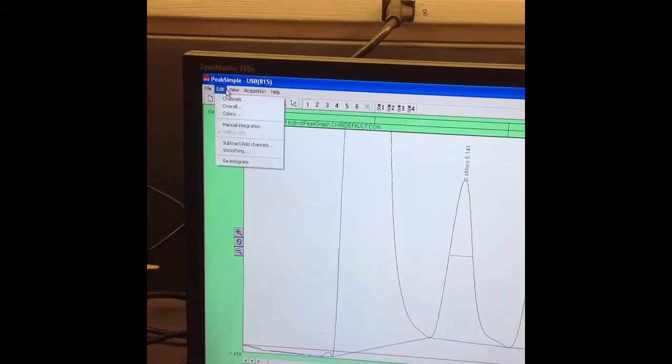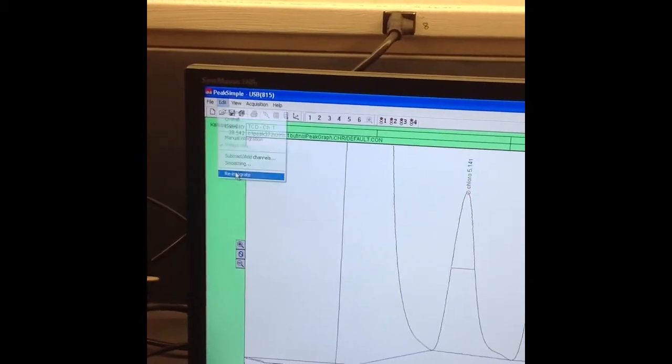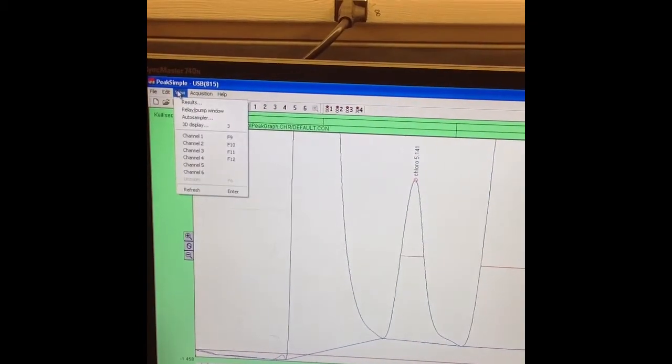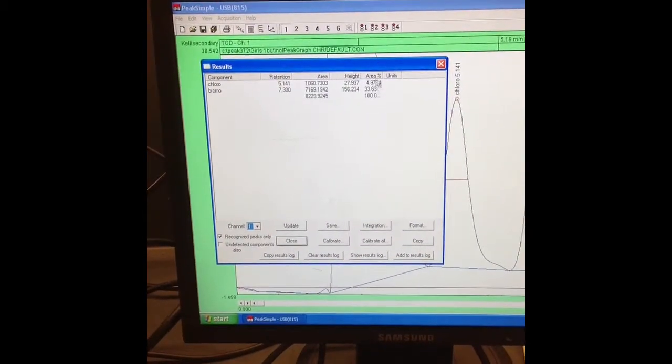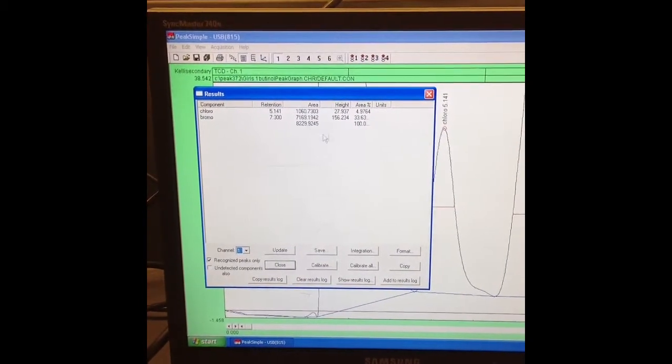So now once that is done, we can go to reintegrate and we can view results. And here we have our percent area, our height and area.